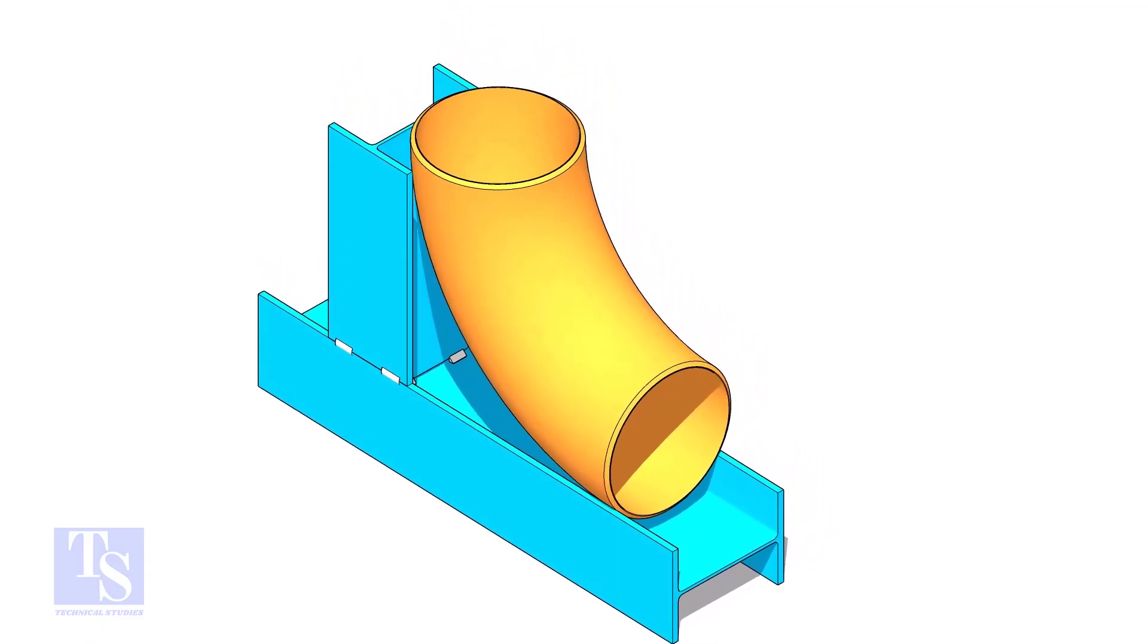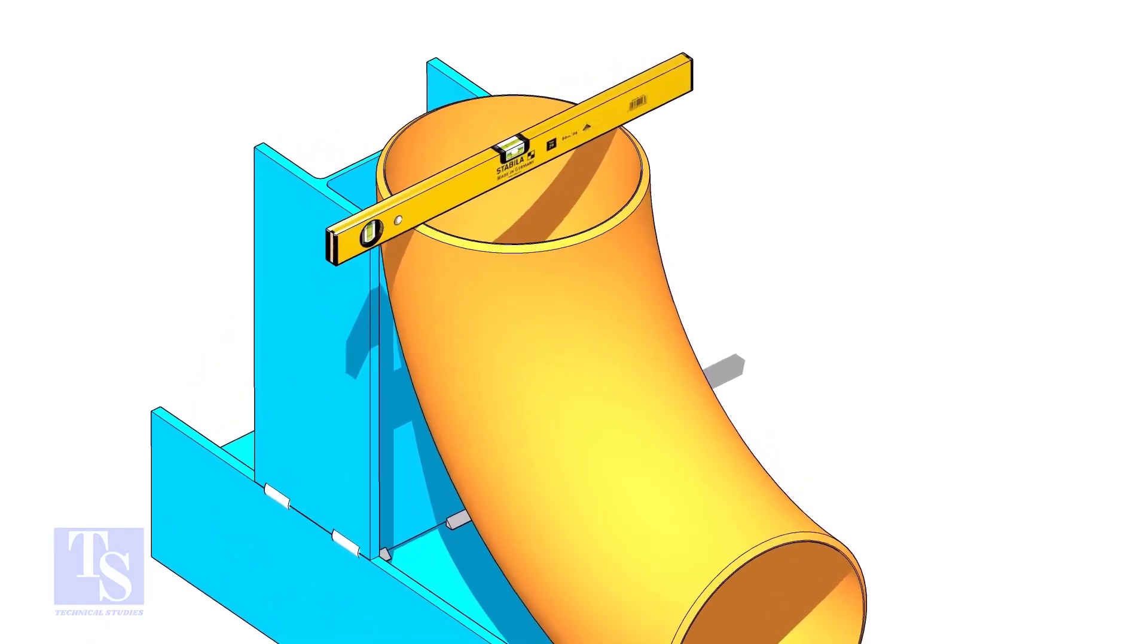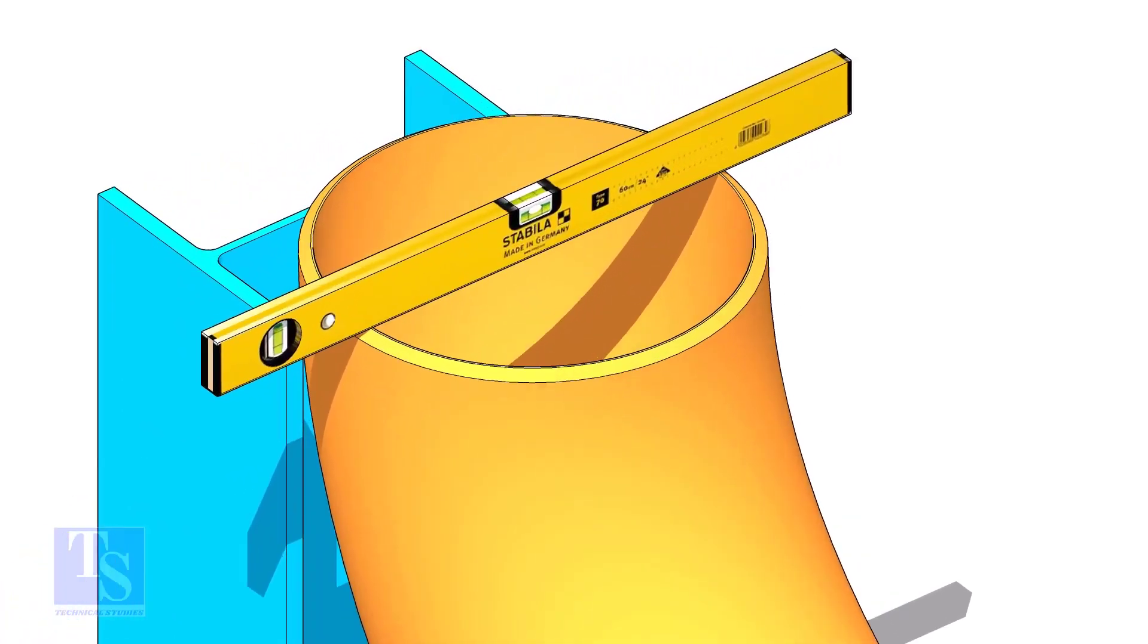Put the elbow in the jig. Level the top face of the elbow on both ways.